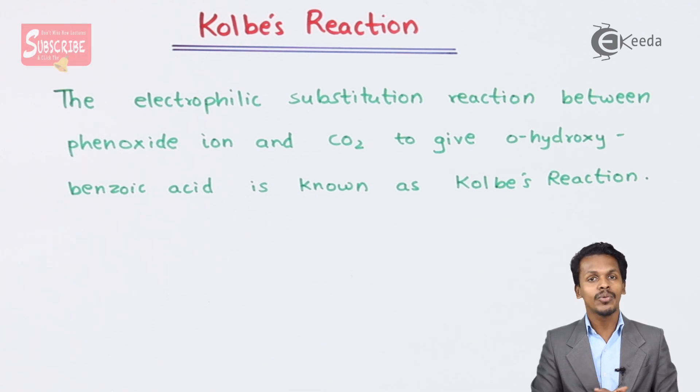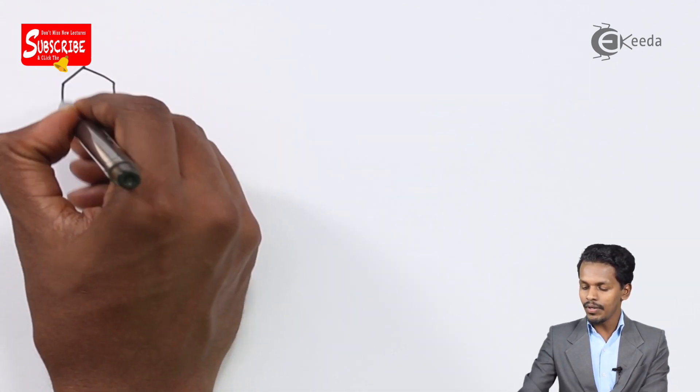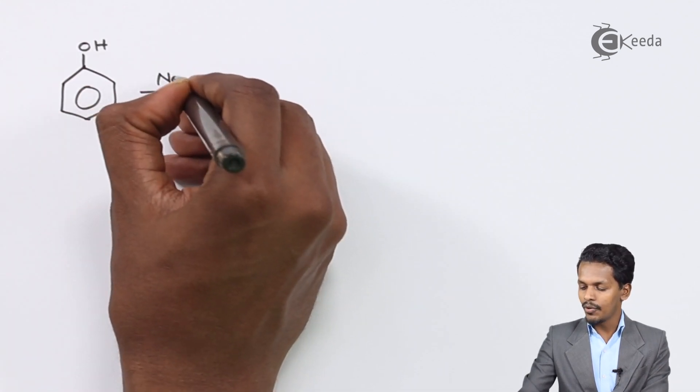So now let me give you the example related to this one. The phenoxide ion that we could obtain can be obtained from phenol. So that is the reason that we will consider a molecule of phenol and suppose if we are treating it with NaOH.